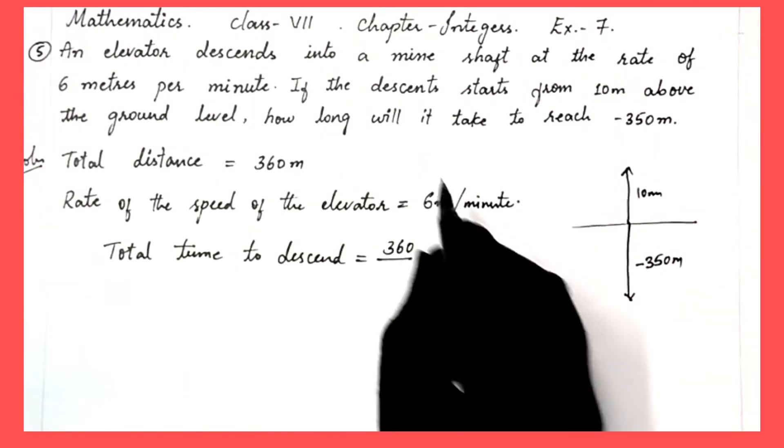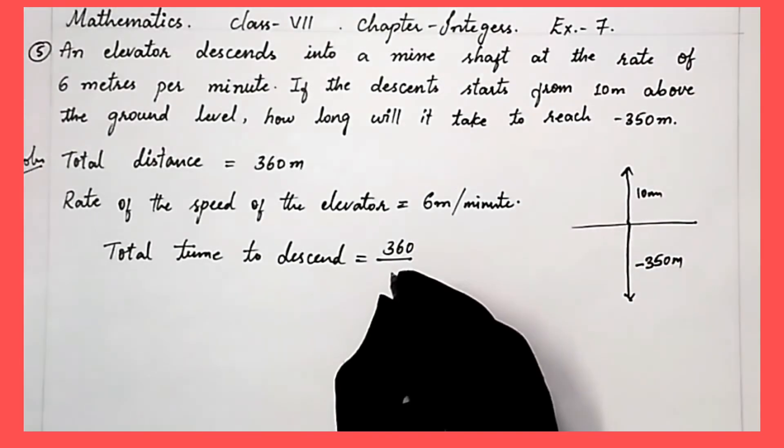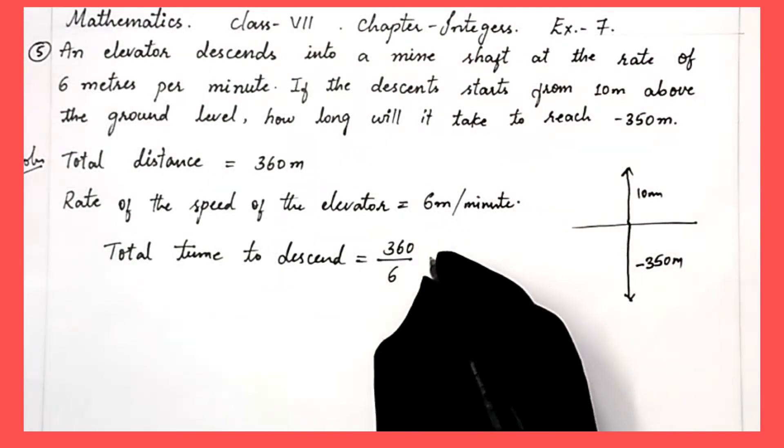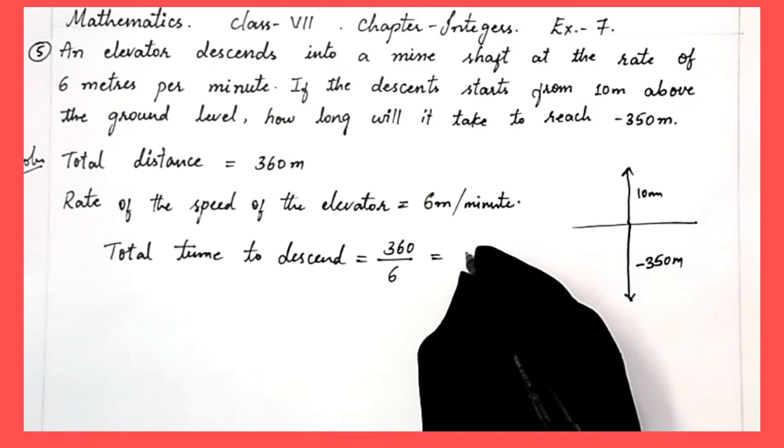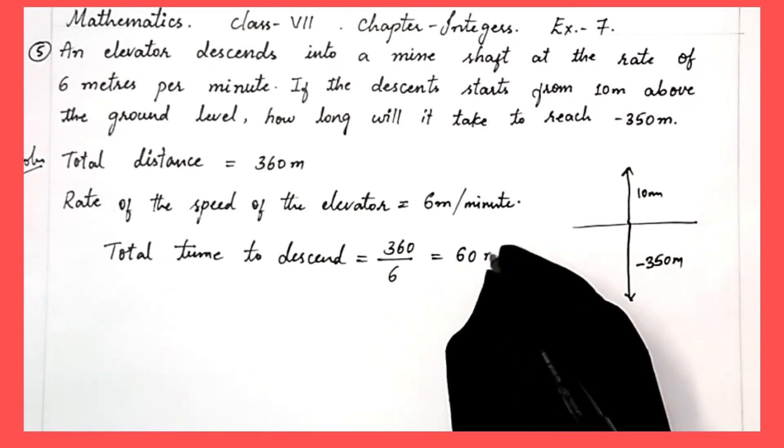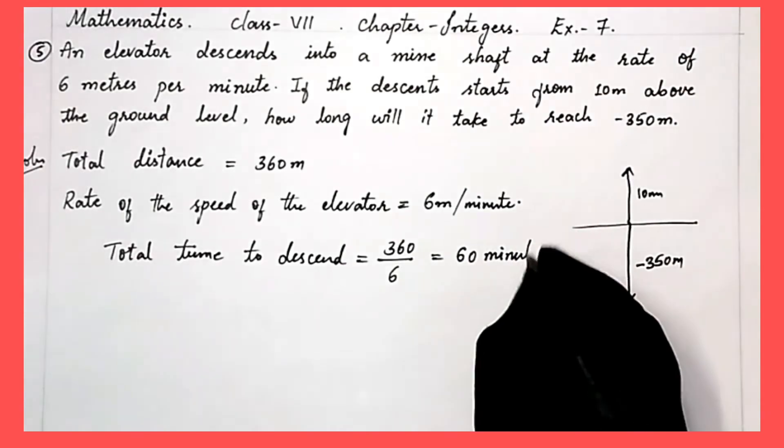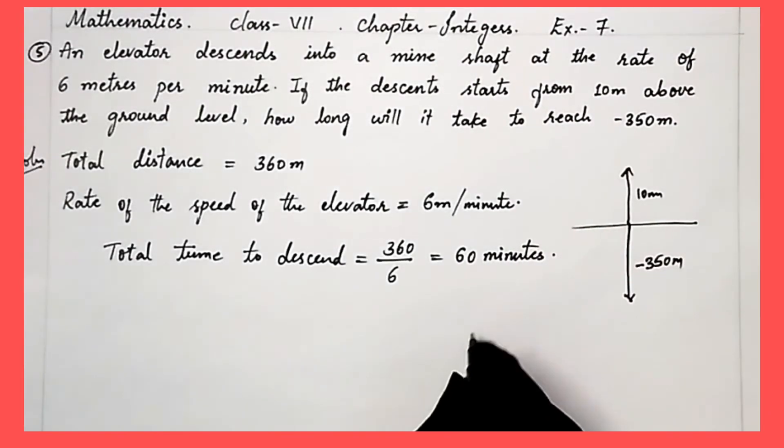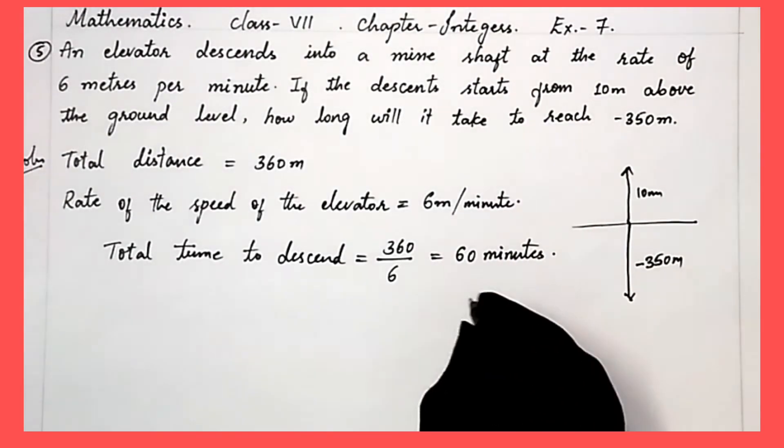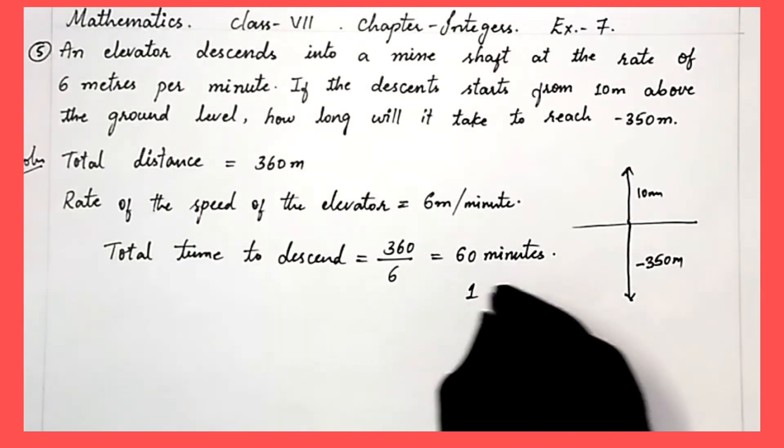The total distance is 360 meters and the rate of speed is 6 meters per minute. So divide the distance by the speed and we get 60 minutes.